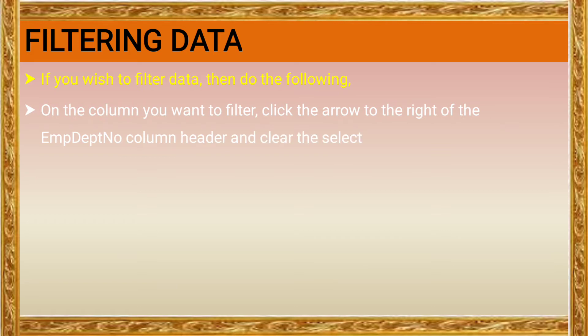The next topic is filtering options. Filtering means displaying data based on a specified condition. We filter to see only the required data. Filtering data means when you need to hide certain records, you apply filter options. If you wish to filter data, do the following: apply filter options on the column you want to filter.